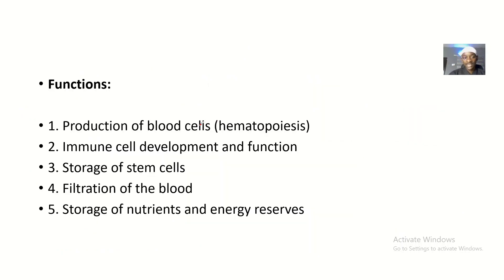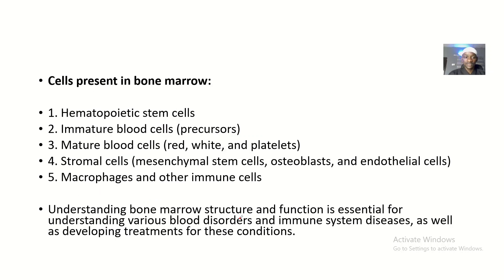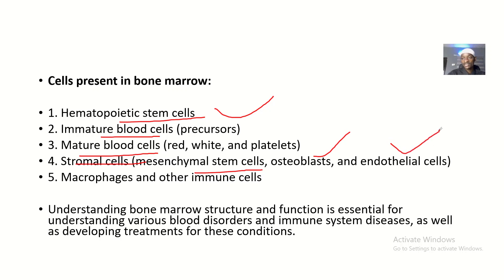So what are the functions again? Production of blood, immune cell development and function, storage of stem cells, filtration of blood, and destruction of old or damaged blood cells, then storage of nutrients and energy reserves. The different cells present in the bone marrow include: hematopoietic stem cells, immature blood cells as precursors, mature blood cells such as red blood cells, white blood cells, and platelets, and stroma cells such as mesenchymal stem cells, osteoblasts, and endothelial cells. These stroma cells secrete growth factors and adhesion molecules, and these factors help the process of hematopoiesis to proceed as it should.